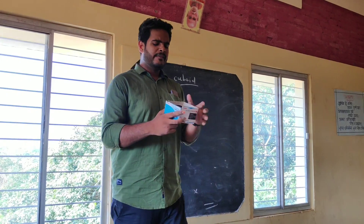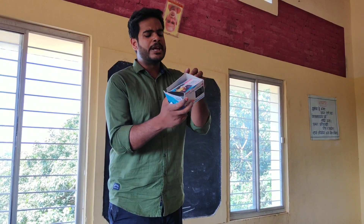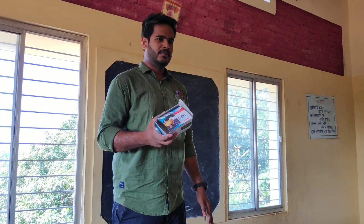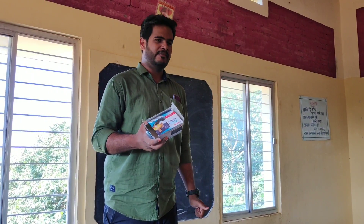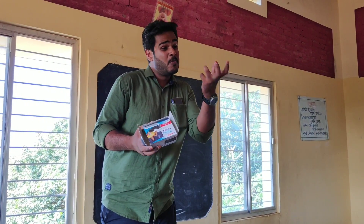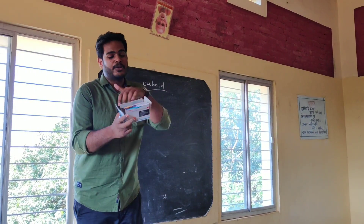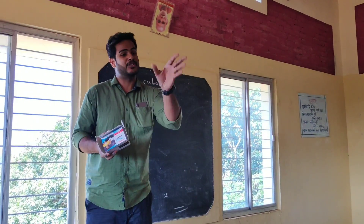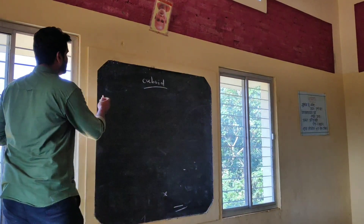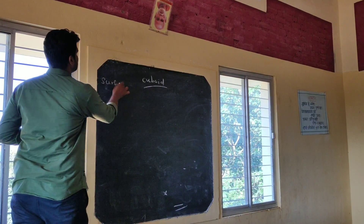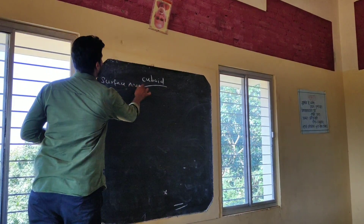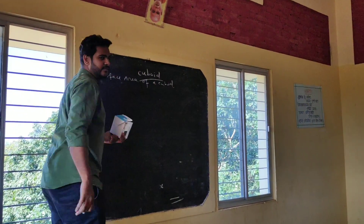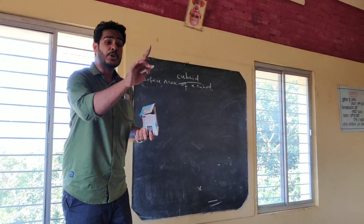Now, if we use color paper to cover the surface of this cuboid, a question arises: how much color paper do we require to cover the surface of this cuboid? We need a measurement for that, and that measurement is called the surface area of a cuboid.